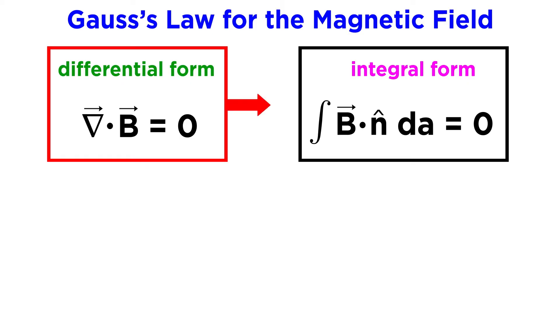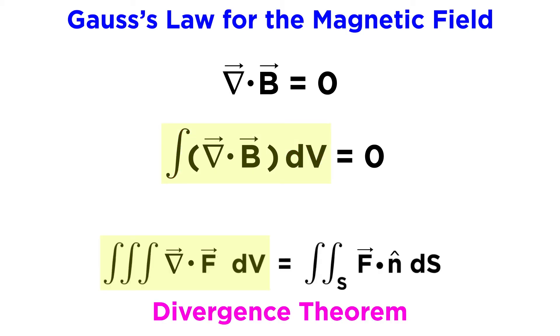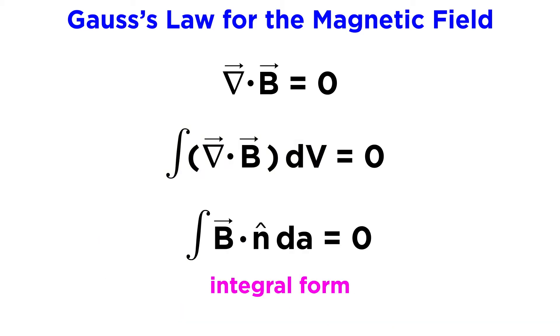We can easily derive the integral form from the differential form in precisely the same manner as we did for the first of Maxwell's equations. Since the method is identical, we will just quickly summarize it here. We can integrate both sides with respect to dv, which means the right side will remain zero, and then we apply the divergence theorem, allowing us to replace this expression with this surface integral. And there we have the integral form.